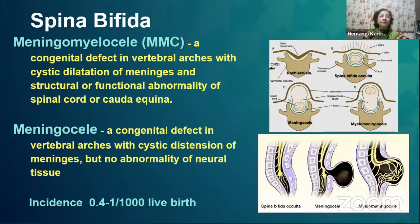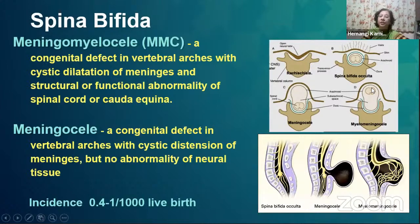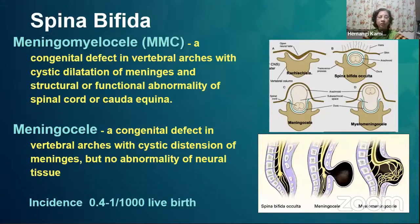Meningomyelocele is defined as a congenital defect in vertebral arches with cystic dilatation of the meninges and structural or functional abnormality of the spinal cord. As shown, the meninges as well as the spinal cord have gone out into the outpouching. Meningocele is defined as a congenital defect in the vertebral arches with cystic distension of the meninges but no abnormalities of neural tissue. The incidence is about 0.4 to 1 per thousand live births.